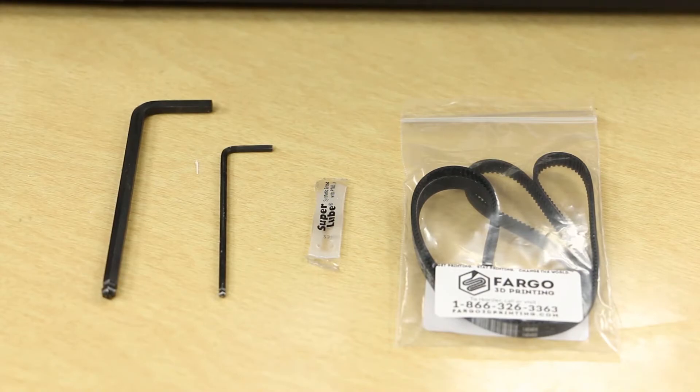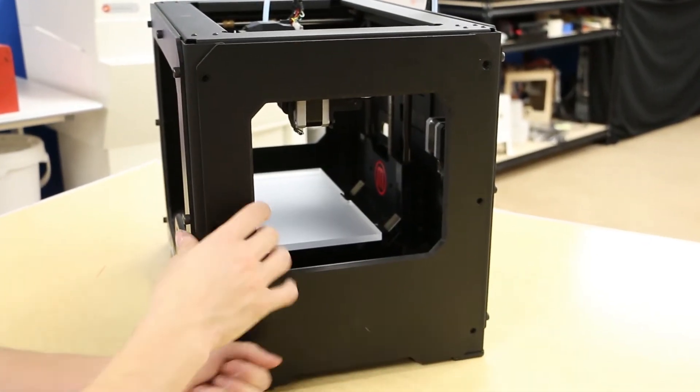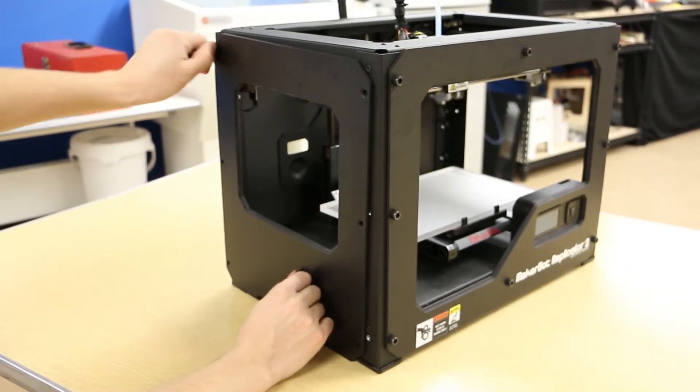After turning off and unplugging the machine, you will remove the right side panel. Next, remove the left side panel. This will allow for easier access to the pulley and X-axis motor.